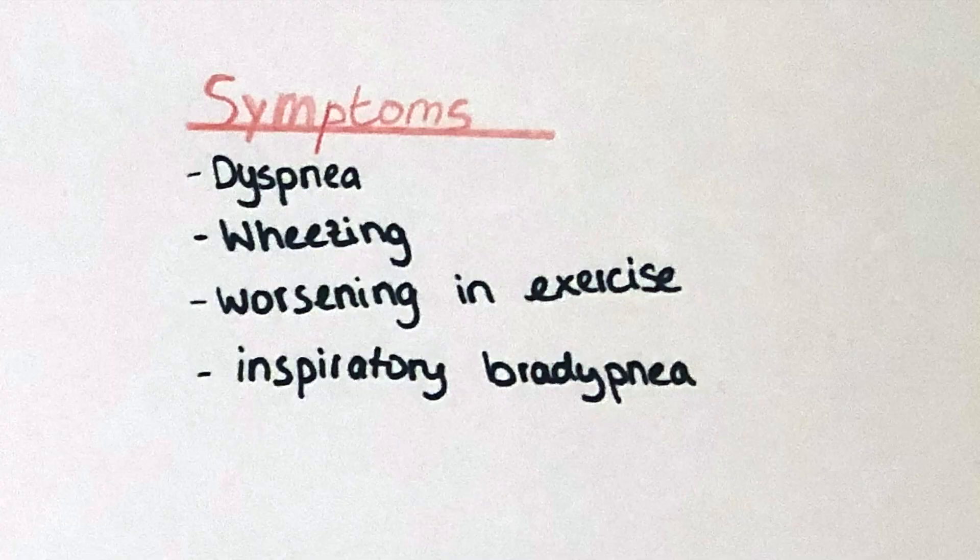The symptoms for dyspnea originating in the larynx are wheezing, worsening of symptoms by exercise, inspiratory bradypnea — that is a very slow breathing rate — intercostal and substernal inspiratory depression. Importantly, it can occur with or without a stridor.